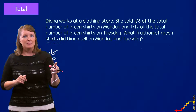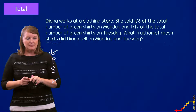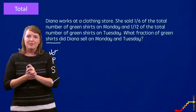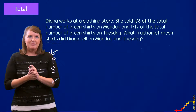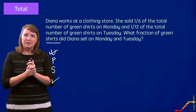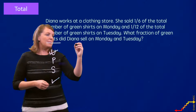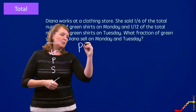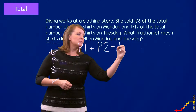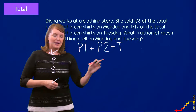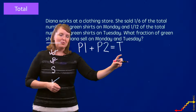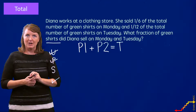Now let's do our plan — this is where we focus on our schema. I would ask: is this a problem where parts are put together for a total? And yes, because I have a Monday part and a Tuesday part, and our job is to figure out the total altogether. So I'm going to use my total equation: P1 plus P2 equals T. That's my plan — I'm going to solve this as a total problem, and this equation will help me organize my work.